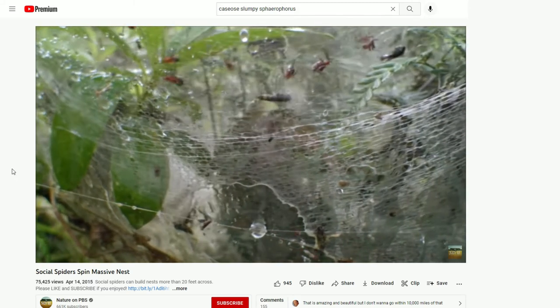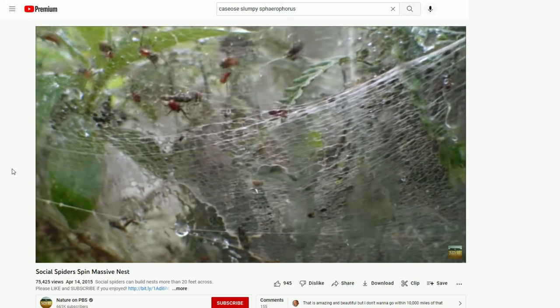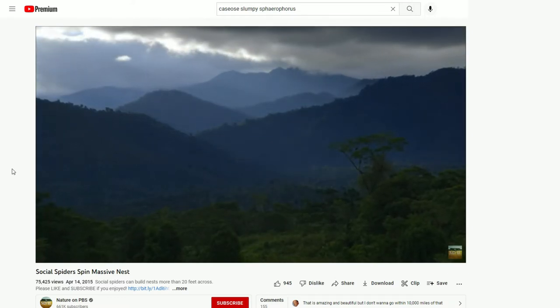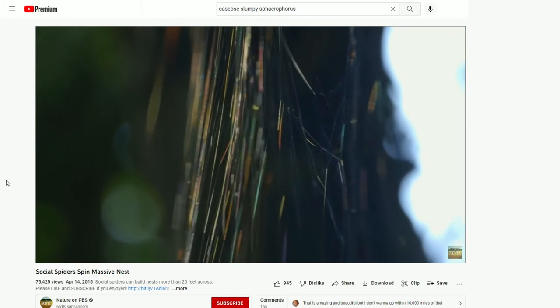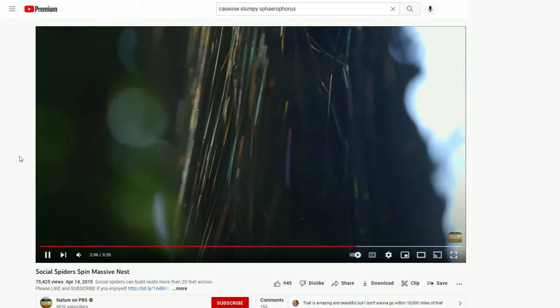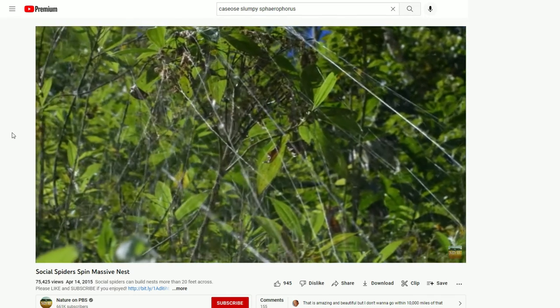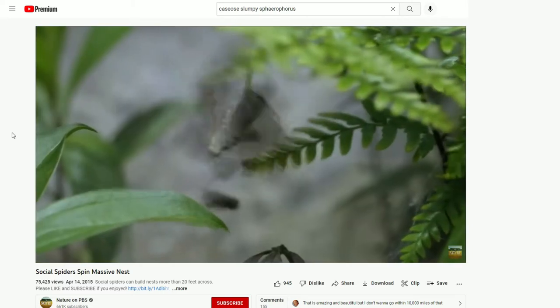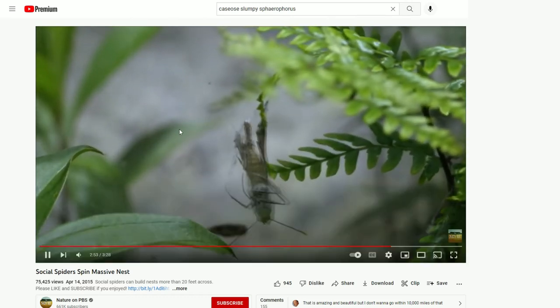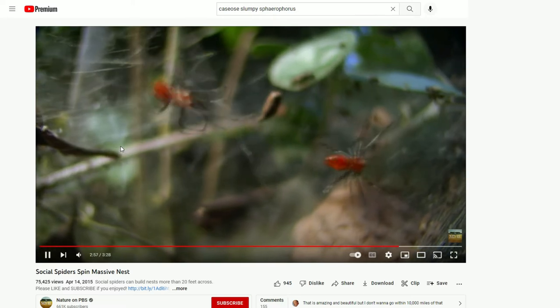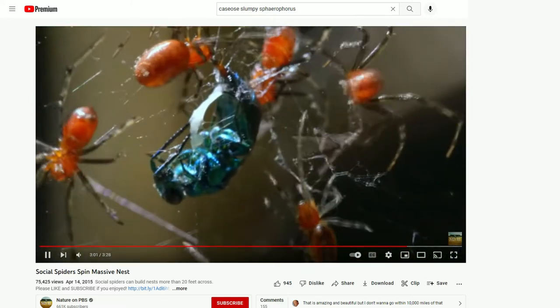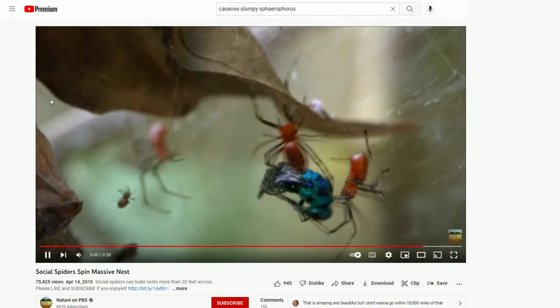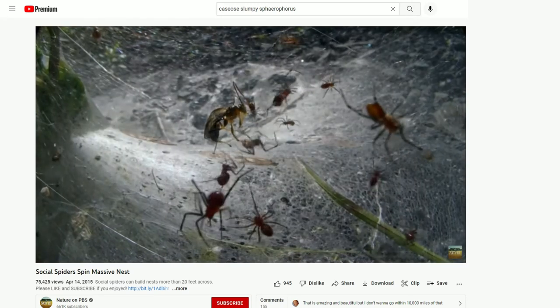This is their social network. The nest can be more than 20 feet across and house 10,000 residents. 90% of them are females. I want to live there, please. It's the females that do all the work—tending, looking after the spiderlings, and building and maintaining their home. So what the hell do the males do? Well, the females don't eat them, I guess that's good. Here in the rainforest, rain really hard. Repairing the damage is easier when you have lots of willing workers to pitch in.